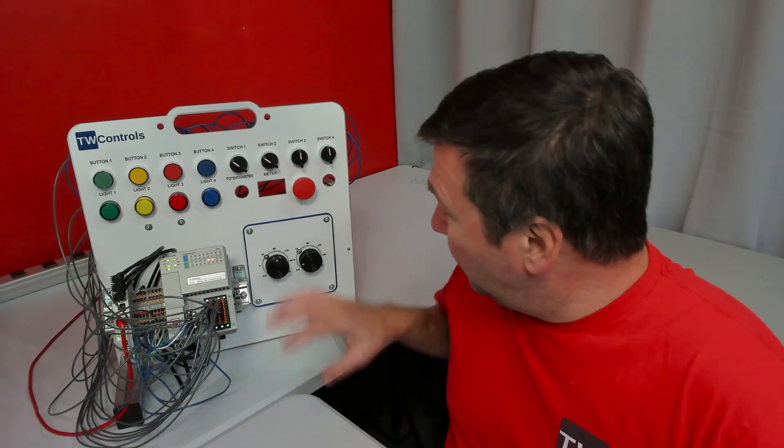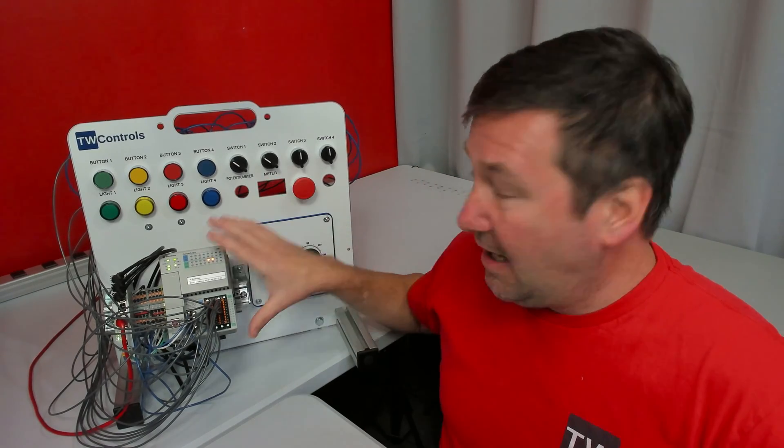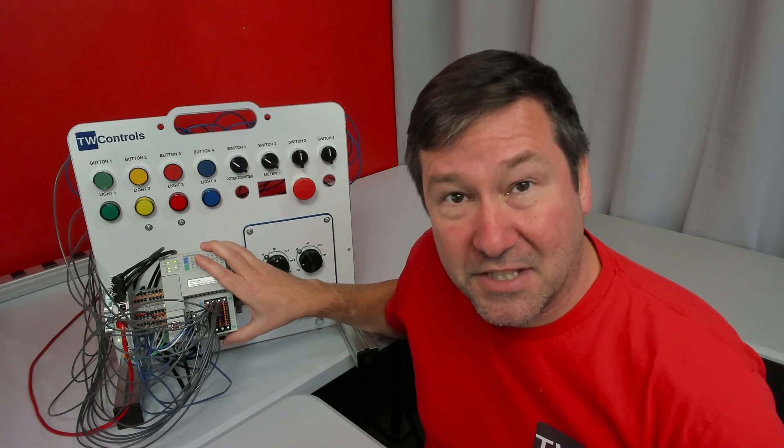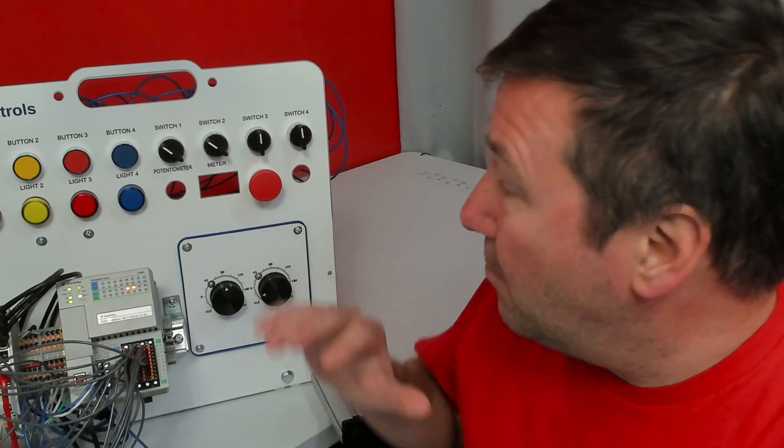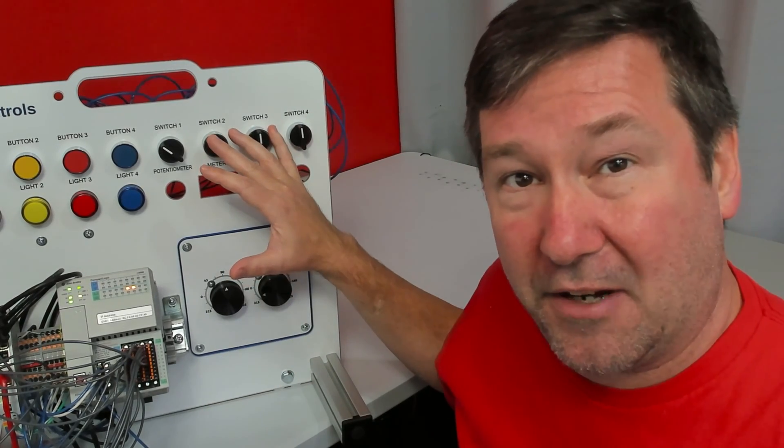Now that we've configured our Kinetic servo drives and motors to communicate with this Allen Bradley Compact Logix PLC and understand the basics of getting them ready to do motion, we're going to wire our trainer per our getting started wiring diagram.